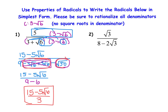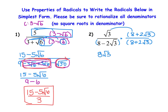Applying the same thinking to Example 2: we notice a square root in the denominator with a difference, so we multiply by the conjugate. The denominator has 8 minus 2 square root of 3, so the conjugate changes the sign: it becomes 8 plus 2 square root of 3. We multiply numerator and denominator by that same expression. Starting the numerator: square root of 3 times 8 gives 8 square root of 3, then plus 2, and then square root of 3 times square root of 3 gives the square root of 9.